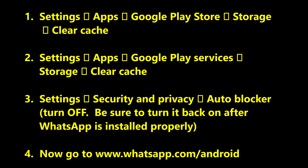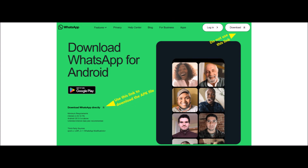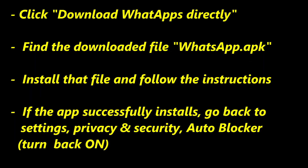And then lastly, go to www.whatsapp.com/android. When you get to this page, you'll see a "Download WhatsApp Directly" option. That's the APK file — download that. Once you've downloaded the APK file, find it on your phone, install it, and follow all the instructions.